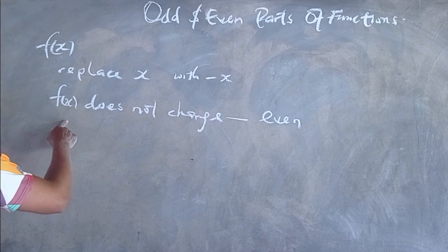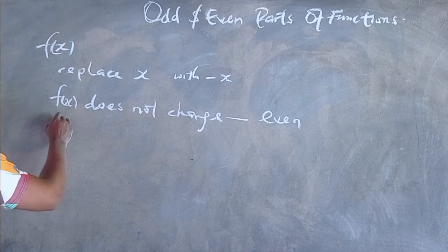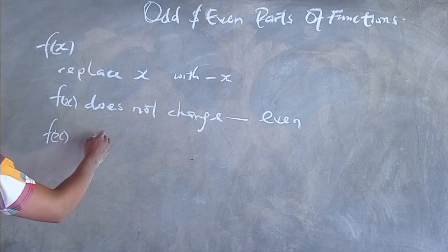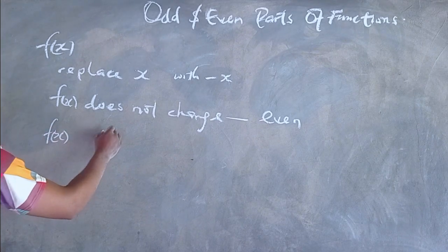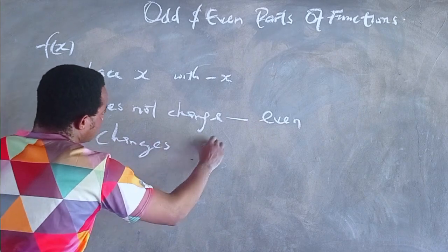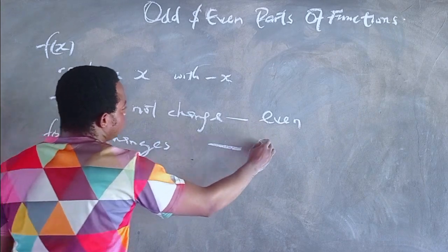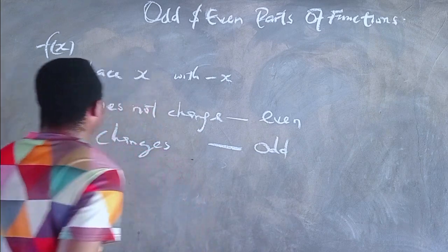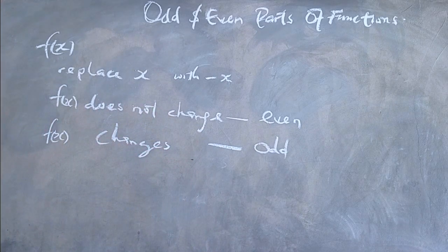On the other hand, if you replace x with negative x in a function and the function changes, then the function is said to be an odd function.